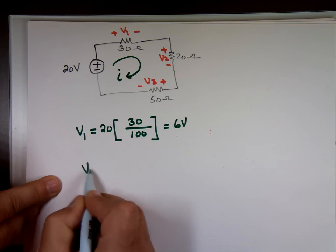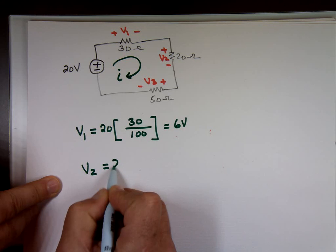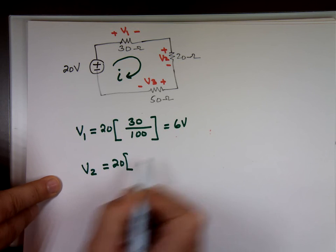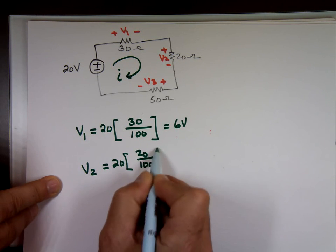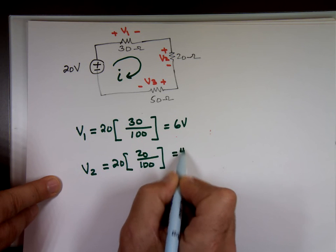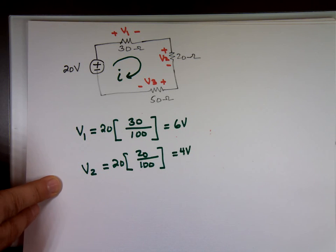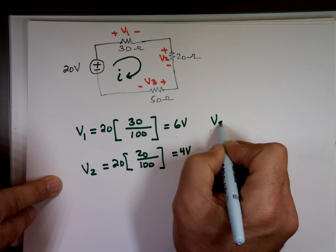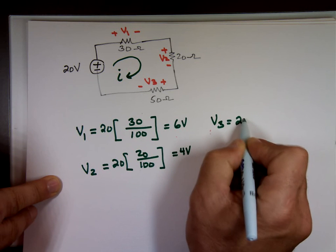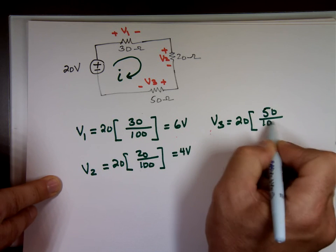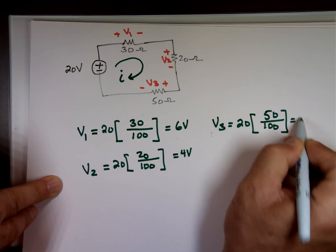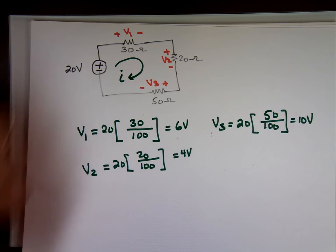What's V2? 20 times 20 over 100. That's 4 volts. And V3 equals 20 times 50 over 100, which is 10 volts. And all that up equals 20 volts.